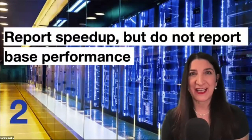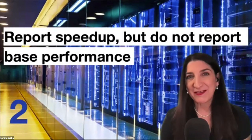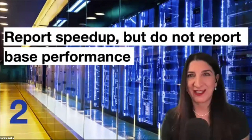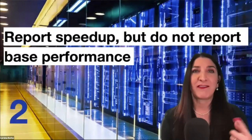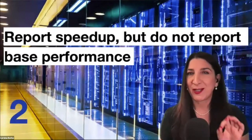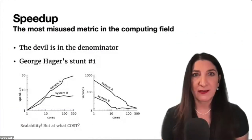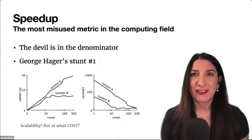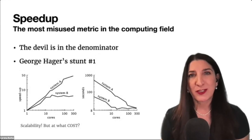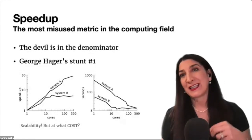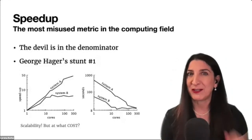The second is a classic one: report speedup, but do not report base performance. Speedup is, by some accounts, the most misused metric in the computing field. It's a ratio — runtime with N processes divided by runtime with one process for parallel speedup, or runtime with the new method divided by runtime with the old method. But always the devil is in the denominator. Torsten Hoefler in his keynote at Benchmarking 2020 called this the very common and oldest known issue. George Hager lists this as his stunt number one, while stunt number two is about slowing down the computation to lower the impact of overheads, thereby boosting speedup — fiddling with the denominator.